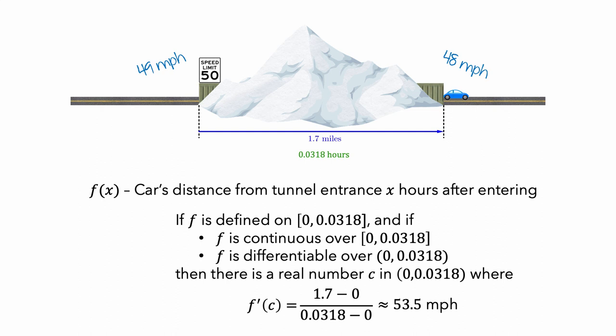The car has some distance value for each moment in time. Since the car can't teleport from one position to another, the distance increases continuously. And since the car can't instantaneously change its speed, f is differentiable. So we have met the conditions for the mean value theorem to be true in this scenario.